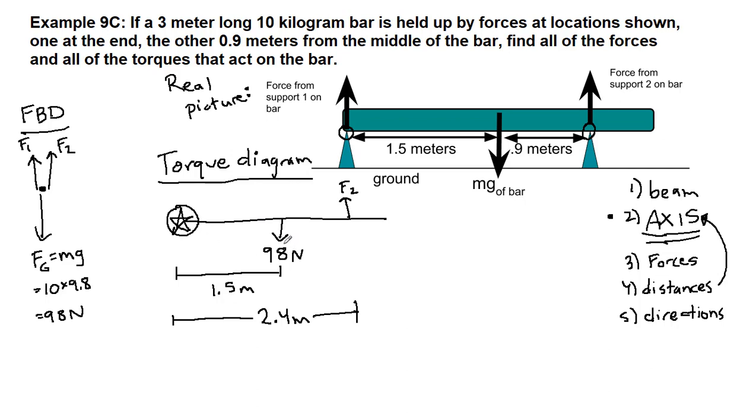This 98 newton force down relative to the axis that we've chosen would be causing rotation in the clockwise direction if we were to continue this circle around and around that axis. And the force 2 from the support, if that were suddenly the only force acting,